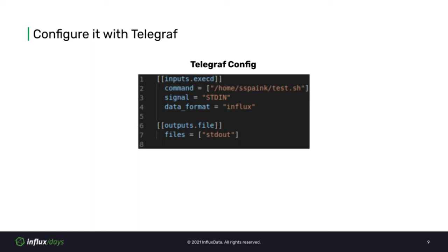The third key sets the data format the external plugin will output metrics in. By default it is set to influx, but you can set it to any data format Telegraph has a supported parser for, such as XML, JSON, or CSV. There's also another key called RestartDelay that lets you set how much time Telegraph should wait before trying to restart the command if there is an unexpected failure. This is defaulted to 10 seconds, which should suffice for all the examples in this talk.